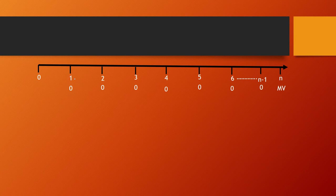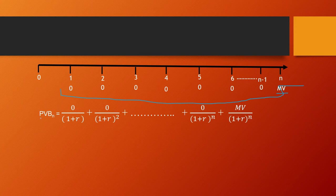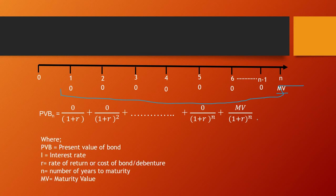At the end of year 1 through year n-1, the interest is zero, but at the end of the nth year — the time of maturity — you will get the maturity value, which is the face value. Using the present value of bond formula, it becomes: PVB = 0/(1+r) + 0/(1+r)² + ... + 0/(1+r)ⁿ + Maturity Value/(1+r)ⁿ. Here, PVB is present value of bond, I is interest rate, R is rate of return, N is number of years to maturity, and MB is maturity value.